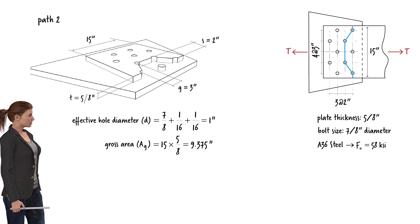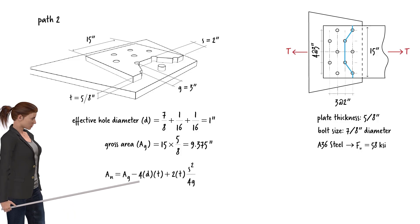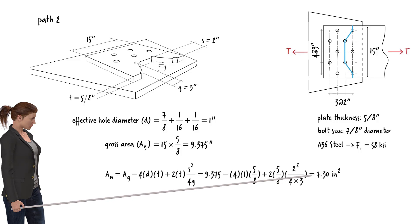For path 2, the net area can be expressed as... Since the path goes through 4 bolts, we subtract 4 times d times t from the gross area. Then we add 2 times t times square of s divided by 4g to the expression. Here we use 2 because there are two inclined lines along the path. This equation yields 7.3 square inches for the net area.